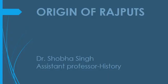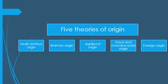The Rajputs are scarcely satisfied with tracing their ancestors from the ordinary herd of mankind. Some pride themselves on a celestial origin while others are content to be semi-celestial, as remarked by colonial scholar James Tod. The issue of the origin of Rajputs remained unresolved and different scholars put up their views very differently. On the basis of various views, we can determine there are five theories of origin of Rajputs: first, Vedic Kshatriya origin; second, Agnikund origin theory; third, Surya-Chandravanshi origin; fourth, Brahman origin theory; and fifth, the theory of foreign invasion.